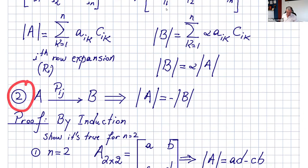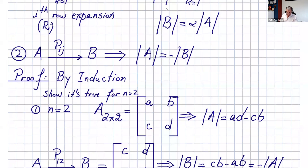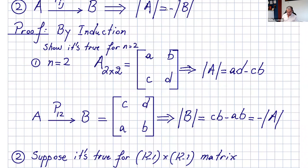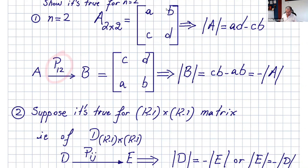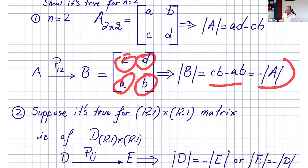The second row operation: when you permute or interchange two rows in A to get matrix B, the sign of the determinant changes. You can prove that by induction. For the base case, n equals two: take a 2x2 matrix with entries a, b, c, d — the determinant is ad minus bc. If you permute row one and row two, the new determinant is cb minus ad, which equals negative the determinant of A.